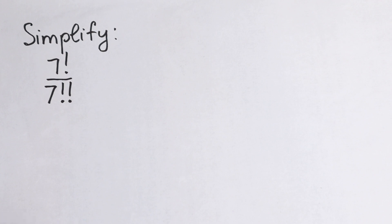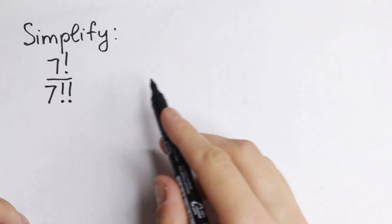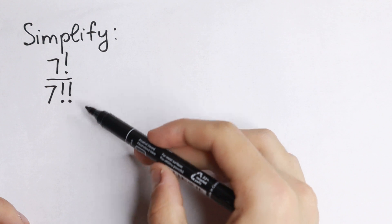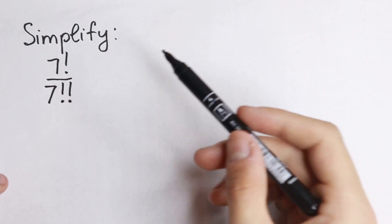Hello everyone, welcome back to High Mathematics! Today we have an interesting algebra problem. We need to simplify 7 factorial divided by 7 double factorial. So how can we do that?